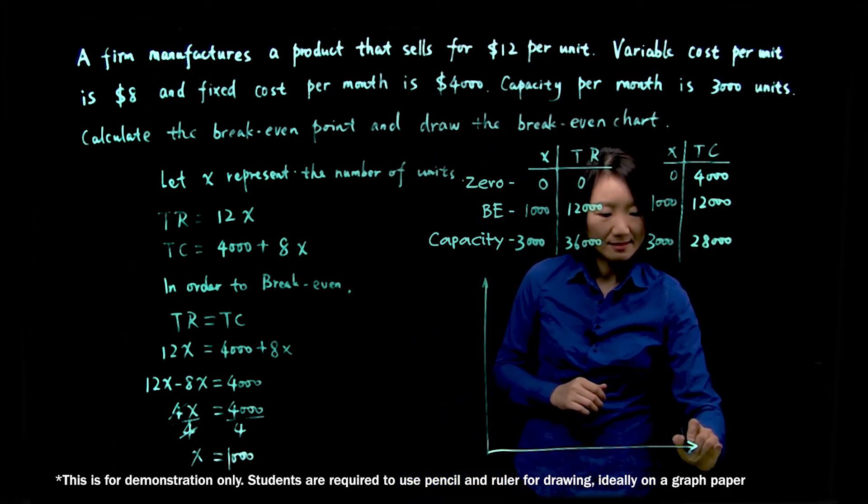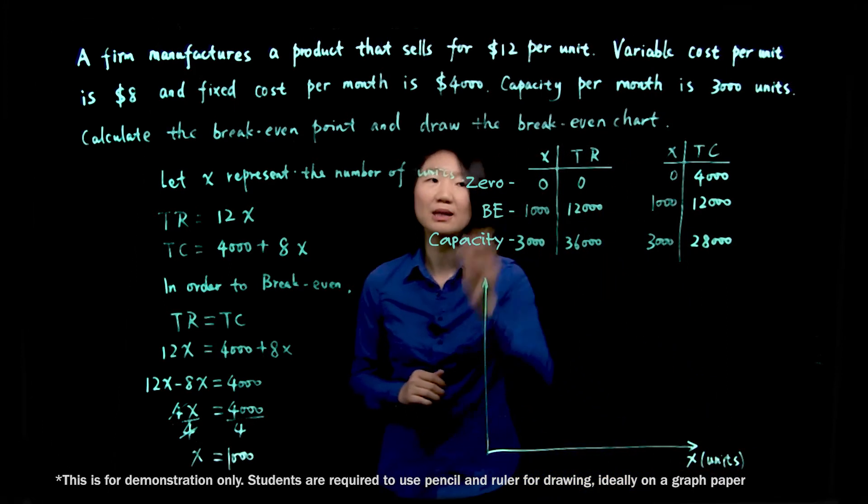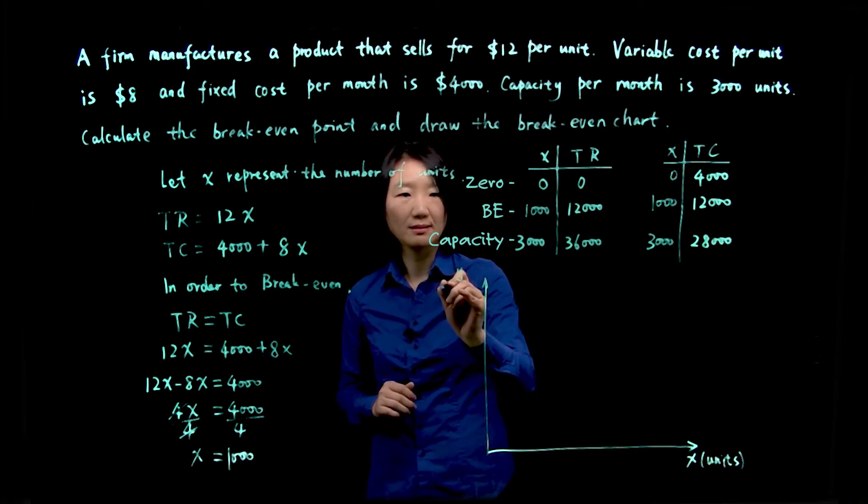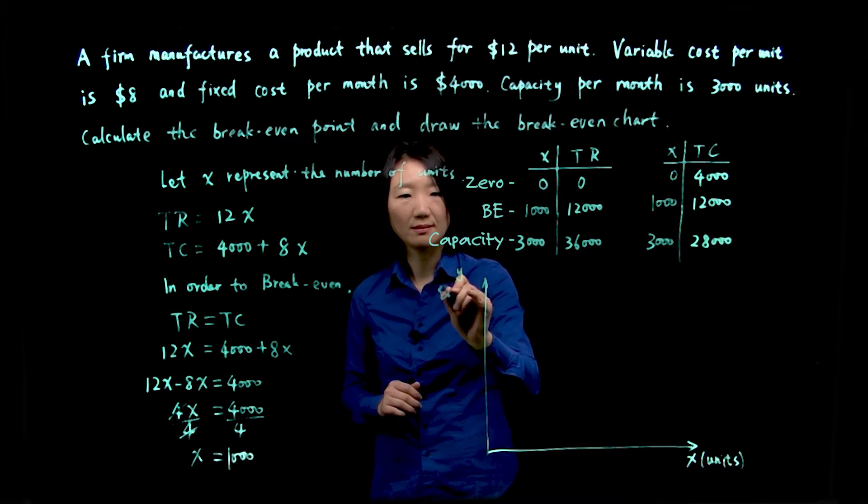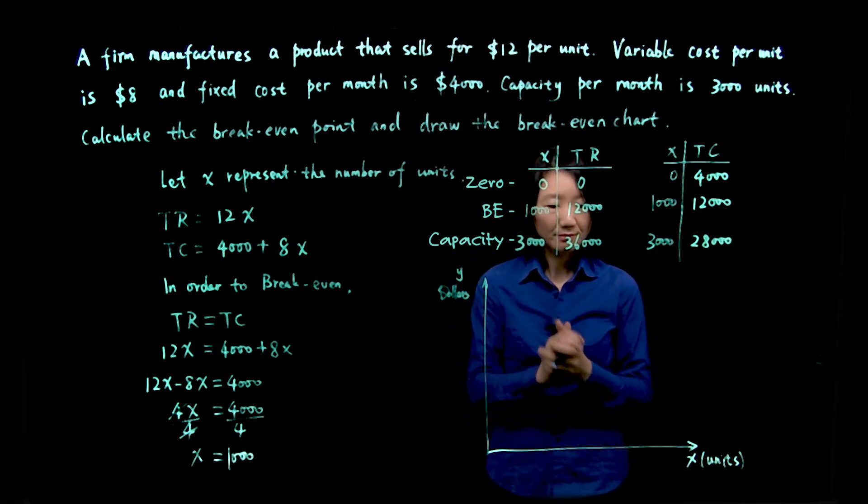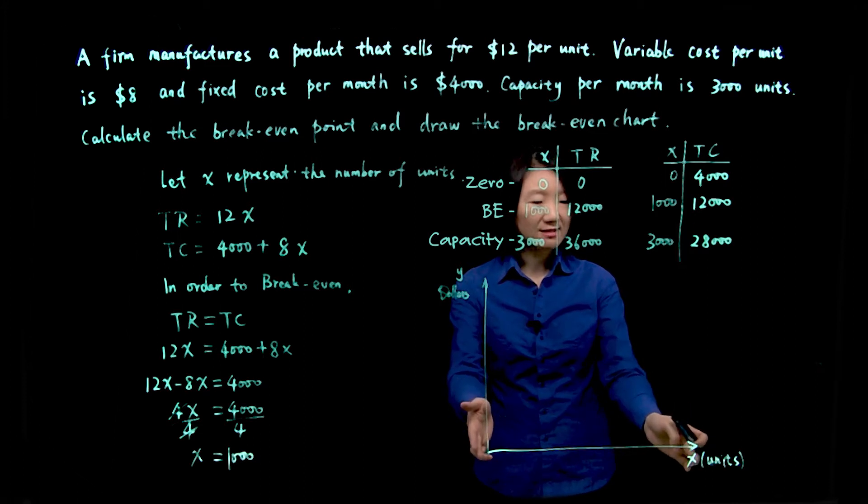So for the x, it's going to be the units, units of products. And the y will be dollars. Because we're going to talk about total revenue and total cost. So when we plan our scale, I'll look at, okay, x for units.